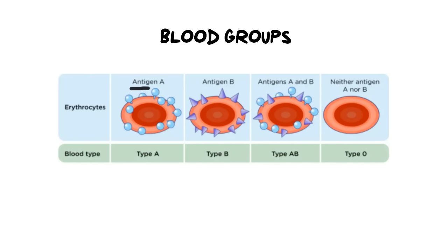If you have antigen A on the outside of your blood cells you're going to have type A. If you have antigens for B you'll be type B. If you are blood type AB it means you have both of those antigens and we can see both of them on the outside. However, if you have no antigens for A or B then you are actually O blood type.